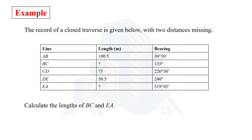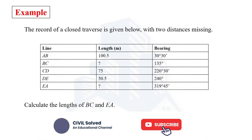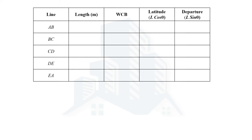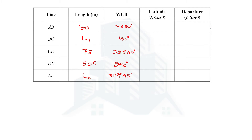To elaborate this case, we will solve an example with five lines where the length of BC and length of EA are missing, whereas all other data — the lengths and bearings of all other lines — are given. To solve this problem we need to determine the latitude and departure of each line. Since the length of BC is not given, we assume it is L1; similarly, the length of EA is not given, so we assume it is L2. The bearings of all lines are given.